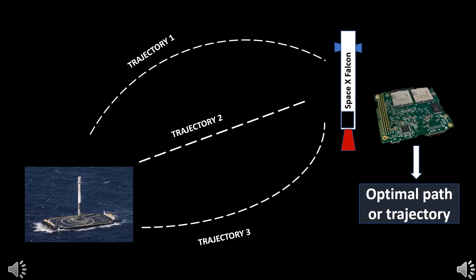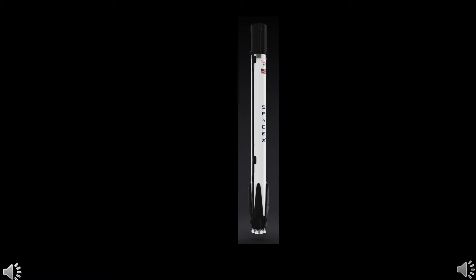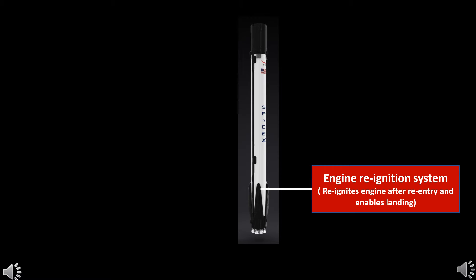The Falcon consists of the following components which make it land with astonishing accuracy. First, the engine reignition system which ignites the engine again after separation from the payload launch. This is the key technology without which landing is not possible.